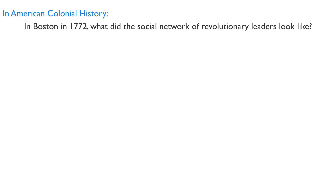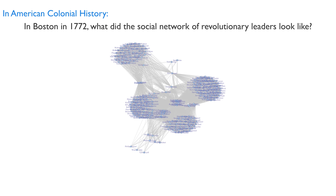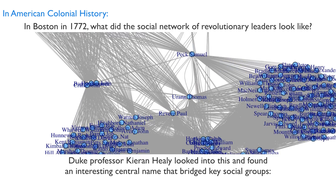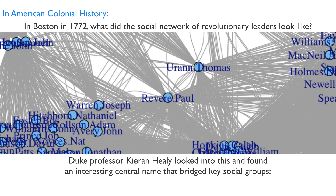One example is in colonial American history. What do you think the social network of political leaders in Boston looked like at the time of the Revolutionary War? Duke professor Kieran Healy looked into this and found several distinct social groups, but one name that bridged them together: Paul Revere.